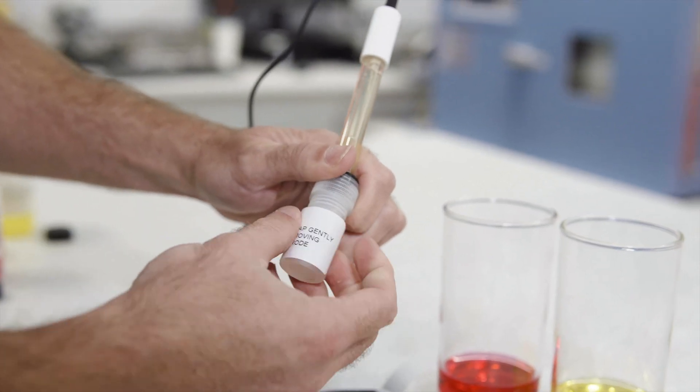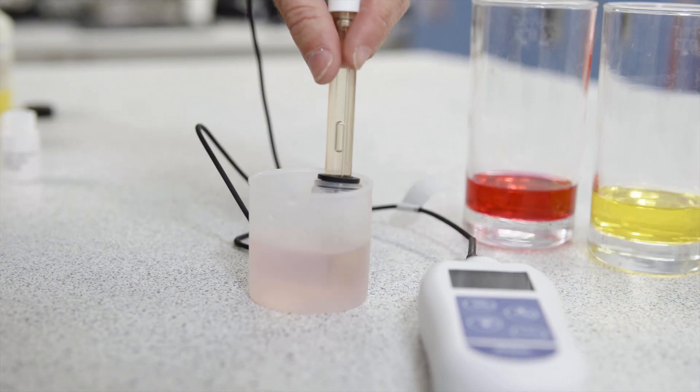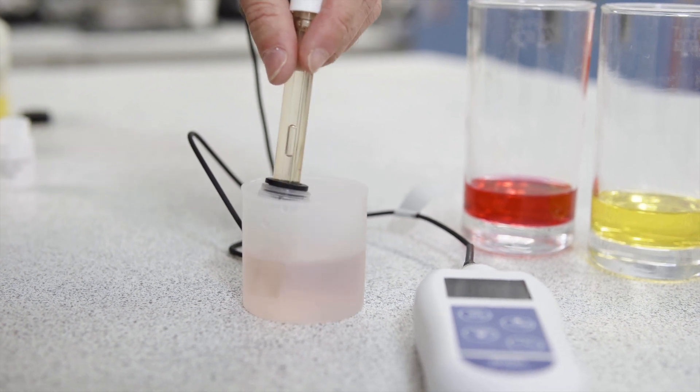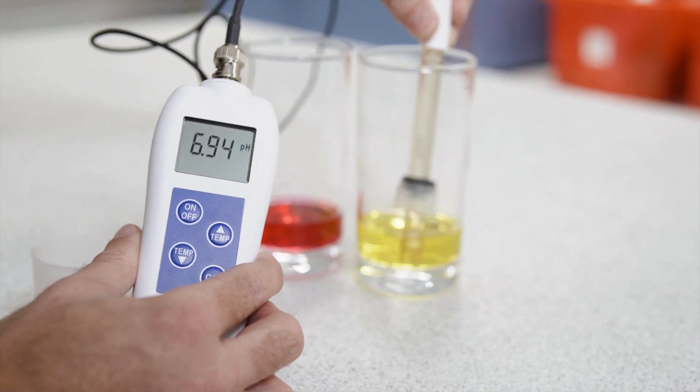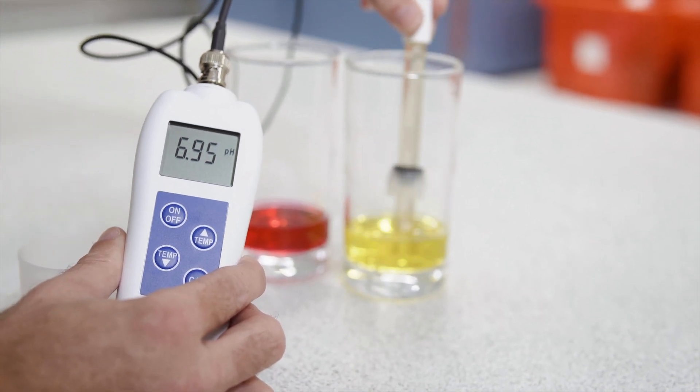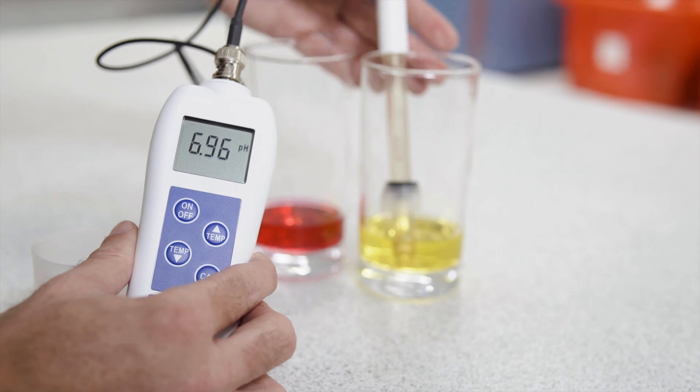If your electrode has been stored in a storage solution, rinse it with distilled or deionized water to remove any residue. Place both probes into the pH 7 buffer solution. Stir the probes in the solution to remove air bubbles and allow the reading to stabilize.